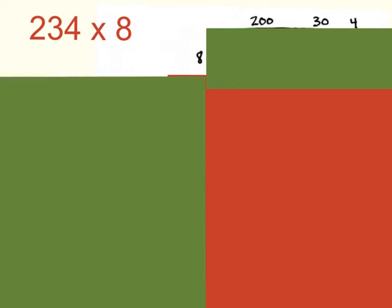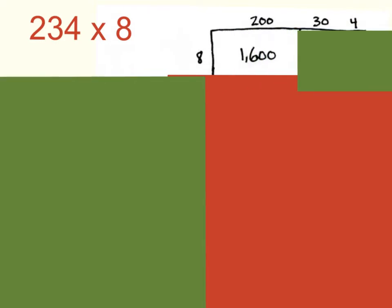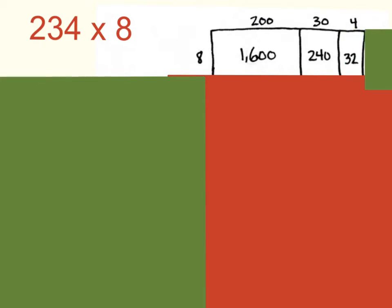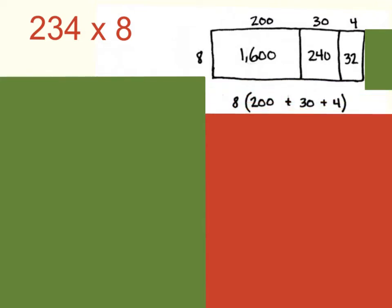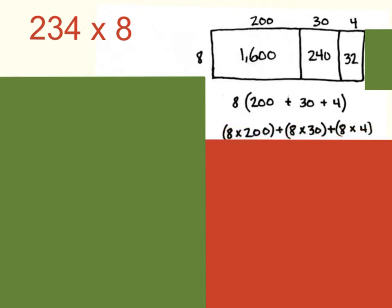200 times 8 will give me a product of 1,600. 30 times 8 will give me a product of 240. And finally, 8 times 4 will give me a product of 32. Two different ways you can set this up. Number one, you could simply show 8 times parenthesis 200 plus 30 plus 4, meaning 8 times all of this together. Another way you could set it up is showing each one separately: 8 times 200 plus 8 times 30 plus 8 times 4, and then add all of these together.